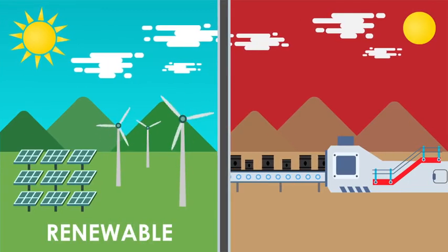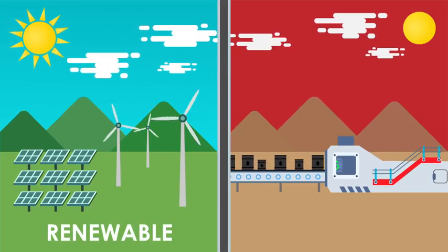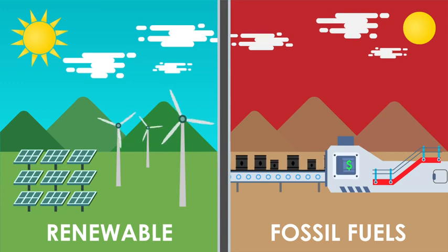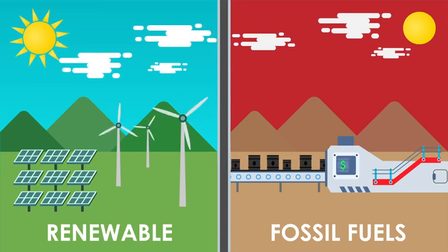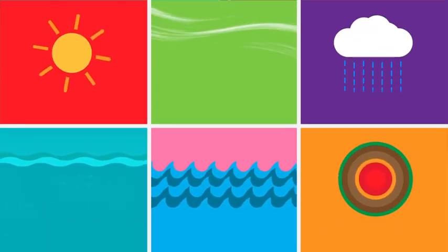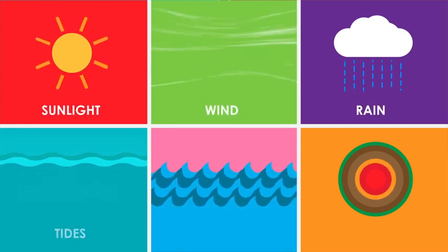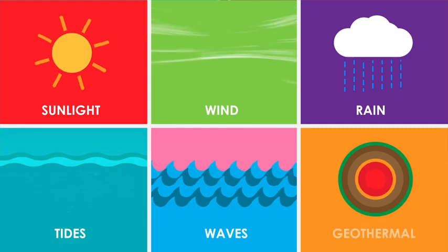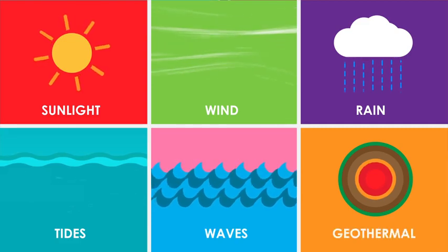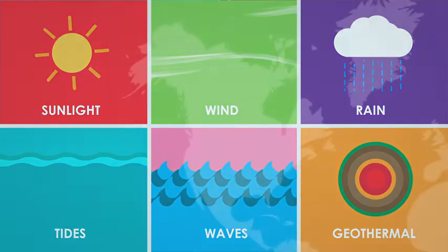Renewable energy comes from resources which naturally replenish in our lifetime, whereas fossil fuels are a one time use resource in the human time scale. Resources for renewable energy include sunlight, wind, rain, tides, waves and geothermal heat. The best part is that we don't need to compromise our planet to harness it.